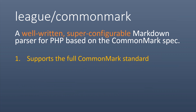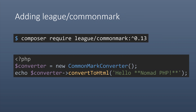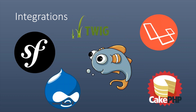That's why we adopted this specification for our Markdown library. Our primary goal was to make a Markdown parser that not only supported the full CommonMark standard, but was also really easy to implement. All you have to do is run a composer require to pull in the package, then there are two lines of PHP code: one to instantiate the converter, and a second to convert Markdown into HTML. And if you're using popular CMSs or frameworks, there are community-built integrations to instantly drop this into your project.